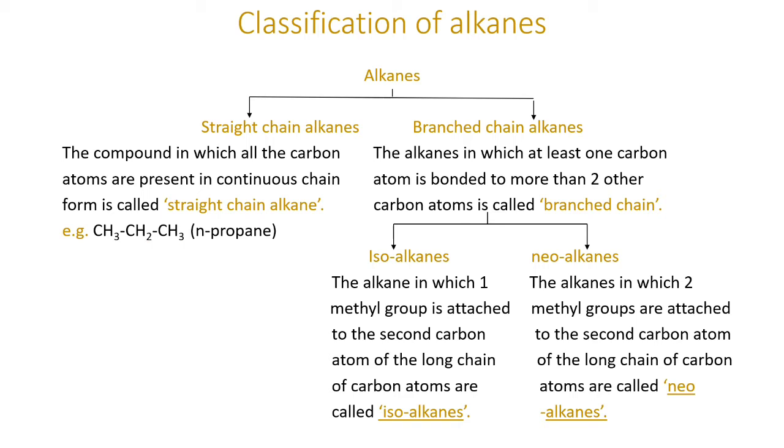Branched chain alkanes: The alkanes in which at least one carbon atom is bonded to more than two other carbon atoms is called branched chain alkane. When one carbon is attached to more than two carbons, a branch is formed. When the second carbon atom is attached to more than two other carbons, it forms a branched structure.